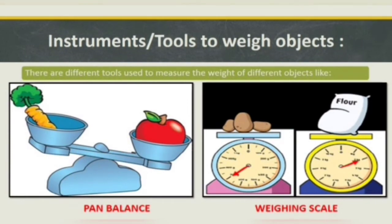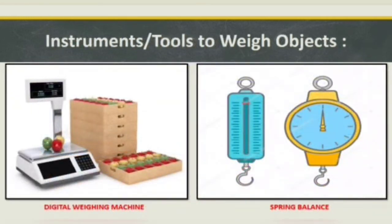Children, look at the pictures of pan balance and weighing scale. These are used to measure the weight of different objects. Pan balance is also used to compare the weight of two different objects as shown in the picture. Dear children, look at this digital weighing machine — you must have seen it in the big bazaar. The next is spring balance, which is also used to measure the weight of few things by hanging them with its hook.